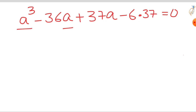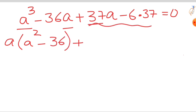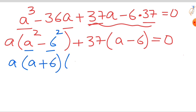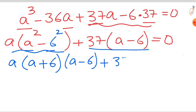We have a cubed and a. Taking a as common from the first two terms leaves a squared minus 36. In the remaining two terms, 37 is common. Taking 37 as common leaves a minus 6, equal to 0. Now 36 can be written as 6 squared, so a squared minus 36 is in the form a squared minus b squared. Using the formula (a+b)(a−b), we write it as (a+6)(a−6), plus 37 times (a−6) equals 0.